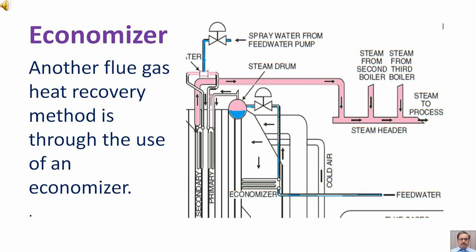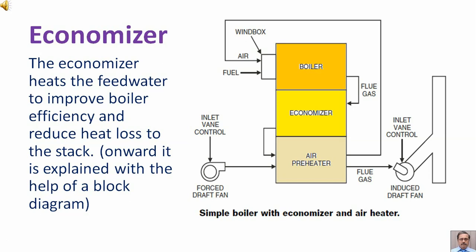Another flue gas heat recovery method is through use of an economizer. Feed water passes through the economizer and goes to the boiler drum. The economizer heats the feed water to improve boiler efficiency and reduce heat loss to the stack. This is explained with the help of a block diagram.